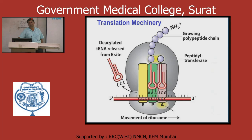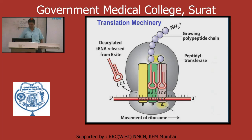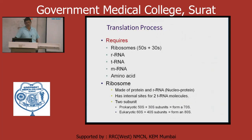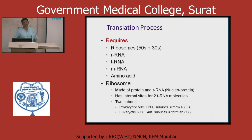One key enzyme is peptidyl transferase — it joins activated amino acids together to make protein synthesis. The basic machinery required for translation: ribosome 50S large subunit and 30S rRNA, tRNA, mRNA, and amino acids. If you know this basic, you can understand the translation process.